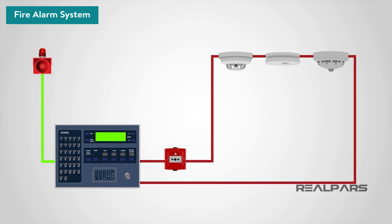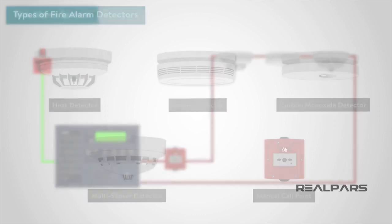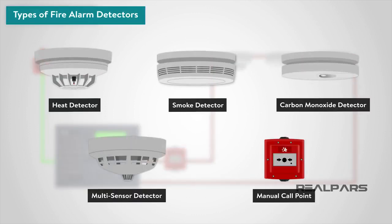At the core of a fire alarm system are the detection devices, from sophisticated intelligent smoke detectors to simple manually operated break glass units — there are a wide array of different types. We can divide them into groups, including heat detectors, smoke detectors, carbon monoxide detectors, multi-sensor detectors, and manual call points.